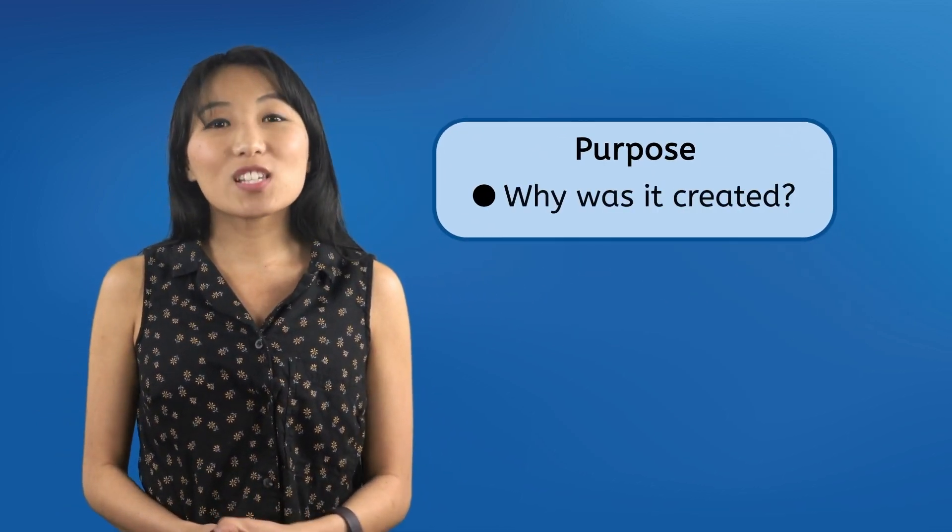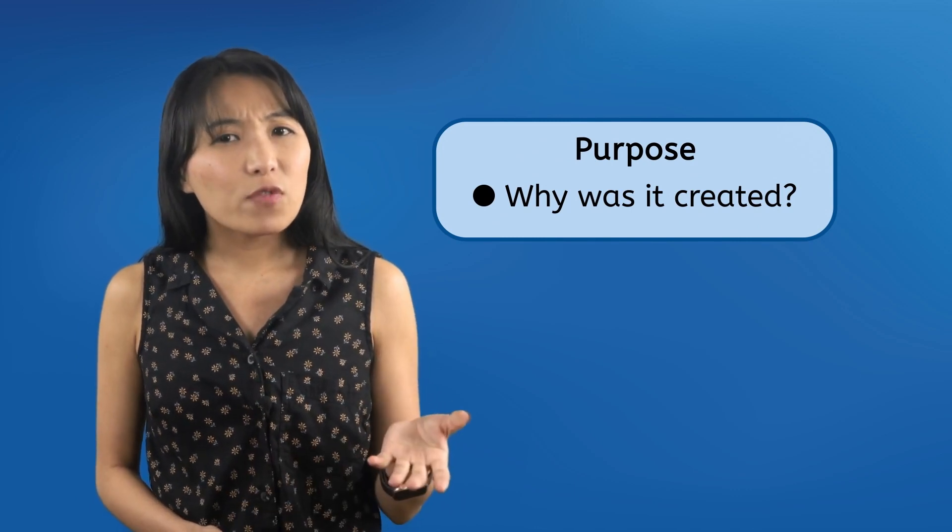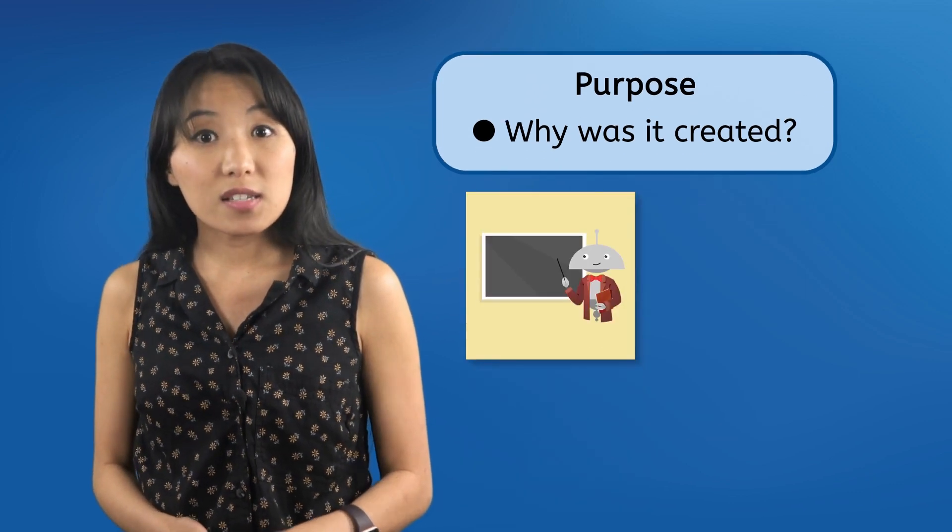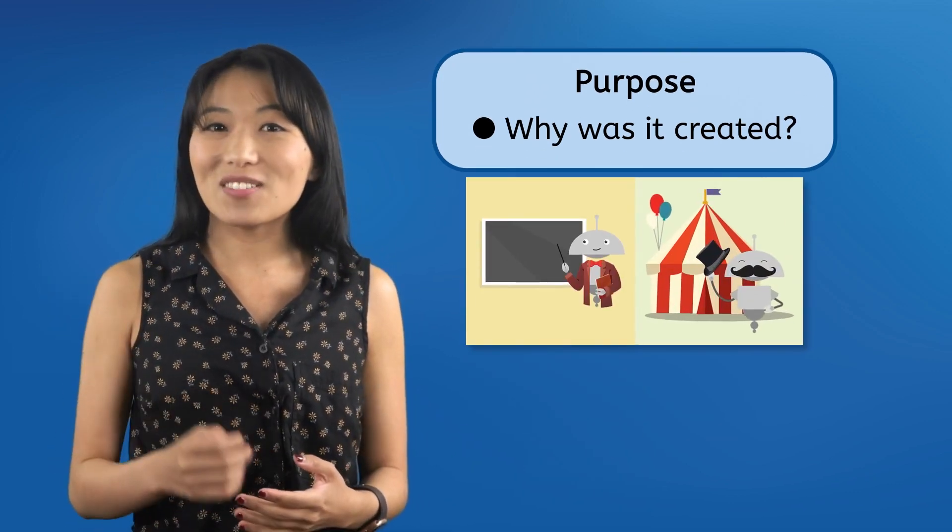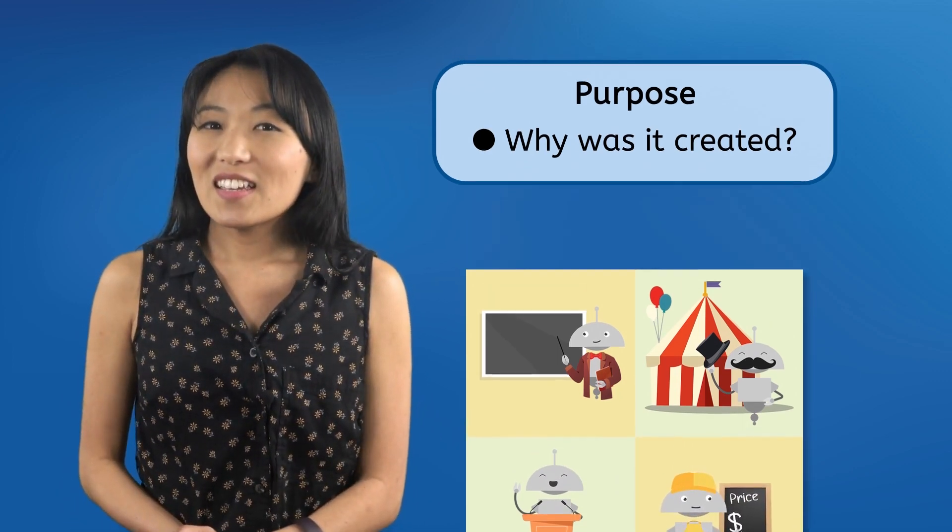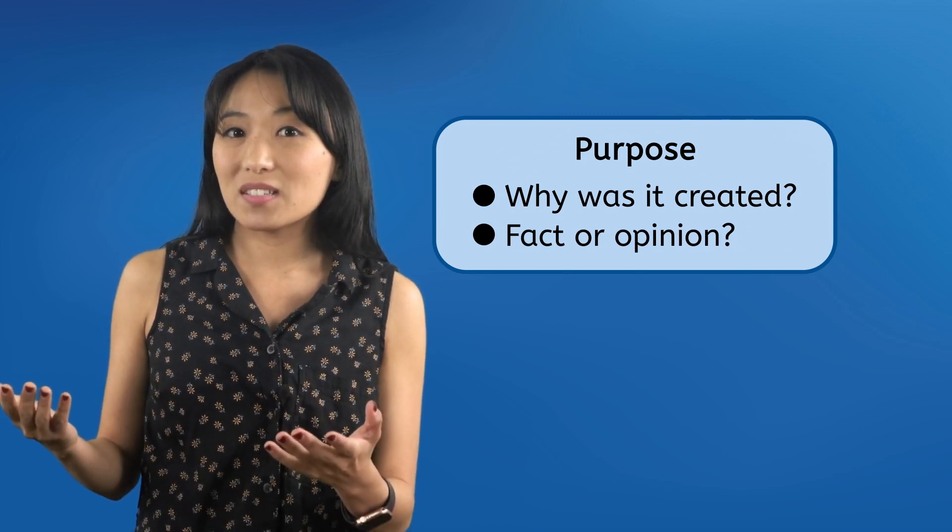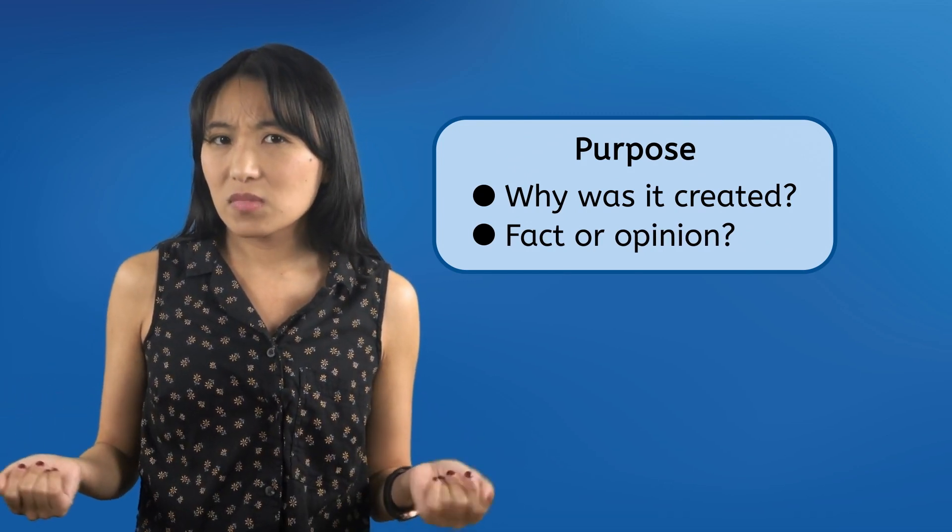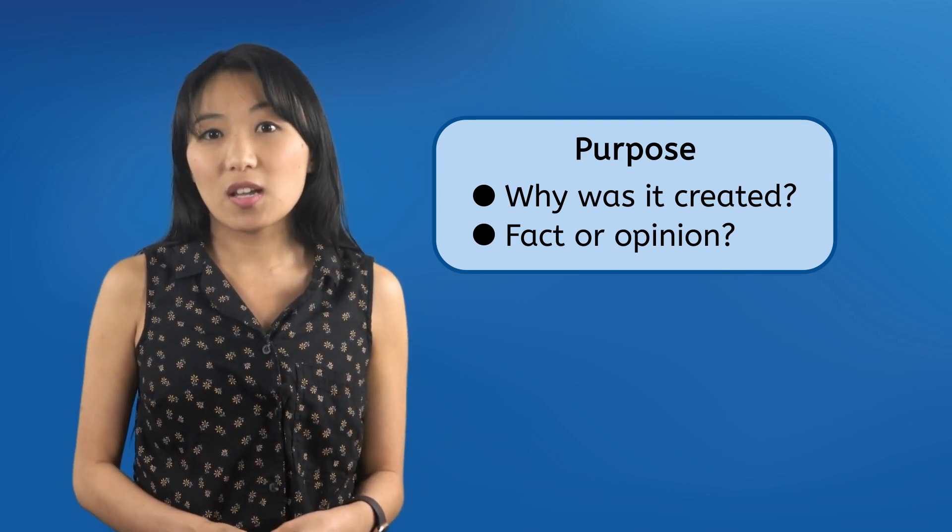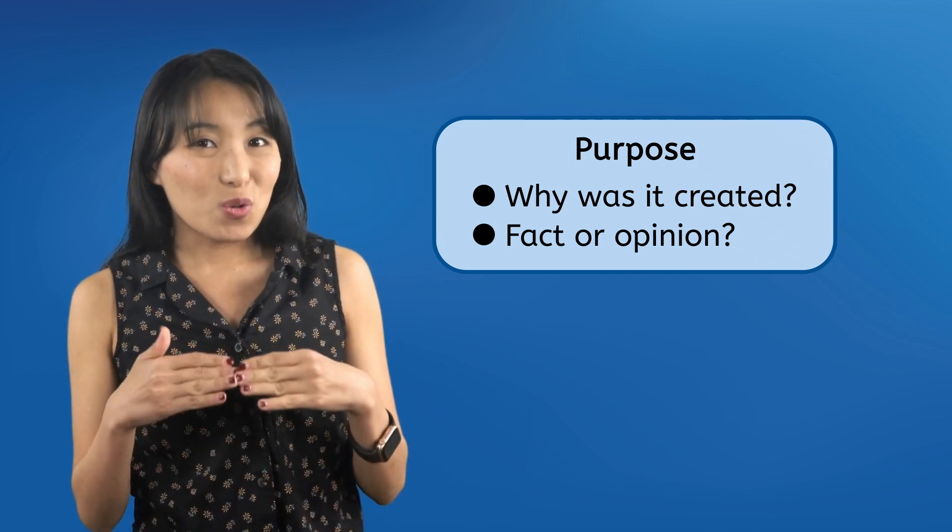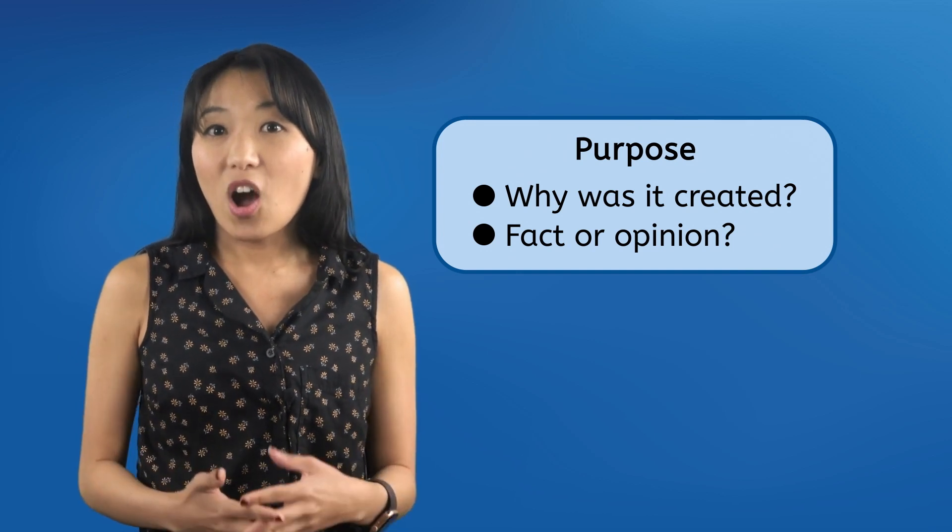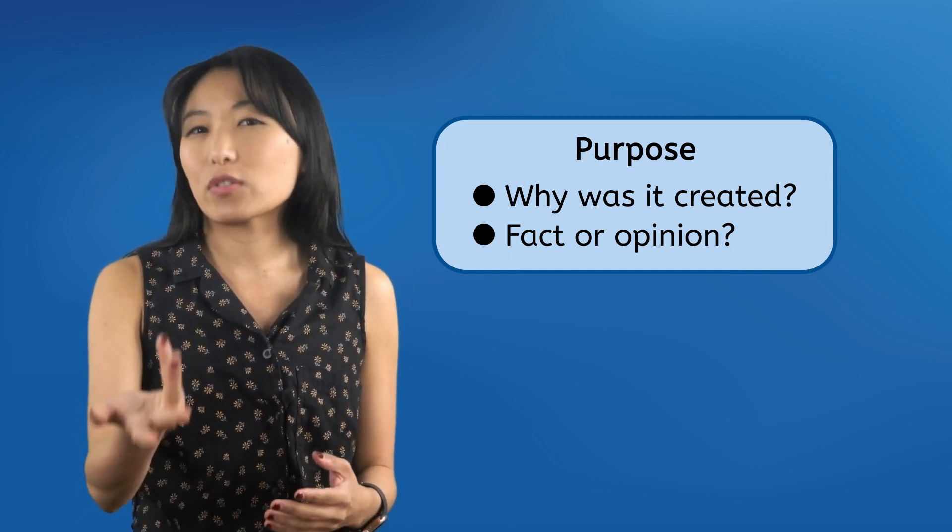The final letter in TRAP stands for purpose. As in, for what purpose was this information source created in the first place? Does it exist to teach you about something, to entertain you, to convince you that something is true, or to sell you something? Is the information presented as fact or opinion, and is that actually what it is? Sometimes the authors are completely transparent and openly admit to their intentions, but other times the purpose is hidden, so you might have to do some digging into the author or organization publishing the information, often at the same time that you're checking out their authority.